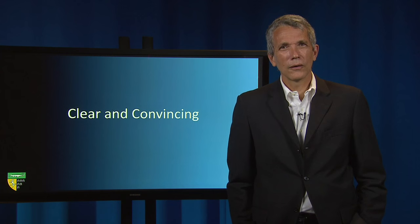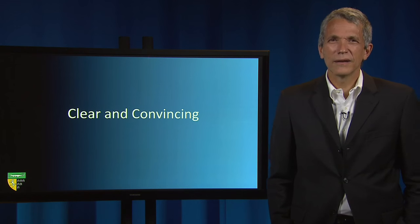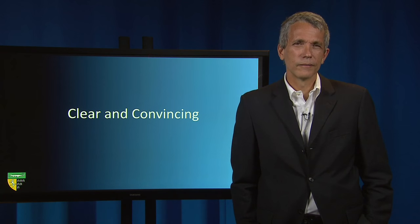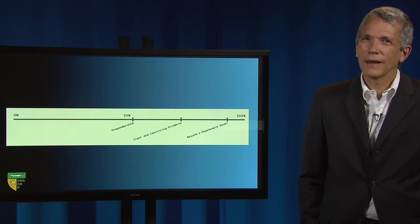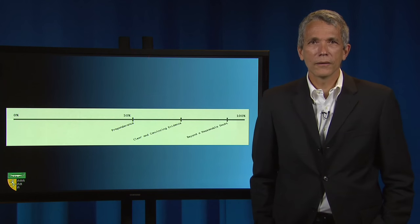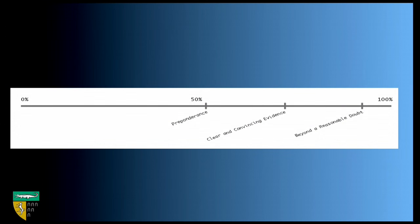In between the preponderance and reasonable doubt standard is the third and final burden of proof: the clear and convincing evidence standard. In many ways, we don't know much more than that this standard requires more than a preponderance and less than proof beyond reasonable doubt. It has been used in circumstances where the defendant might bear a stigma from being found civilly liable, or where there are irreversible consequences of a court action.